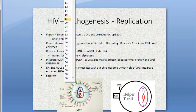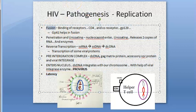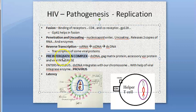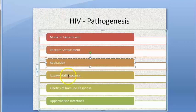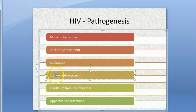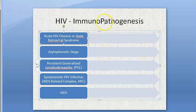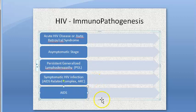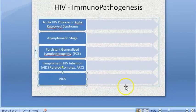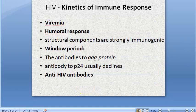To summarize replication: fusion → penetration and uncoating → reverse transcription → pre-integration complex → nuclear entry → provirus formation → latency. The next step in pathogenesis is immunopathogenesis, which covers: acute HIV disease (acute retroviral syndrome), asymptomatic stage, persistent generalized lymphadenopathy, systemic HIV infection, and finally AIDS. After that, the kinetics of immune response will be covered.